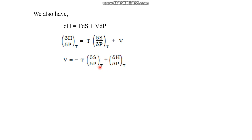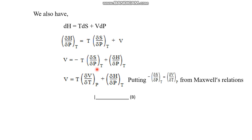Now applying the Maxwell relation — since the variables are P and T, this is obtained from the Gibbs free energy G, and the relationship from G is a negative one. So instead of −(∂S/∂P)_T we can substitute +(∂V/∂T)_P, and the negative sign vanishes. This gives us Equation B: V = T·(∂V/∂T)_P + (∂H/∂P)_T.